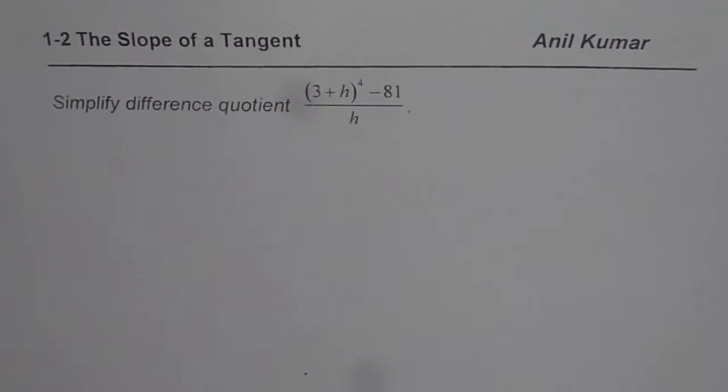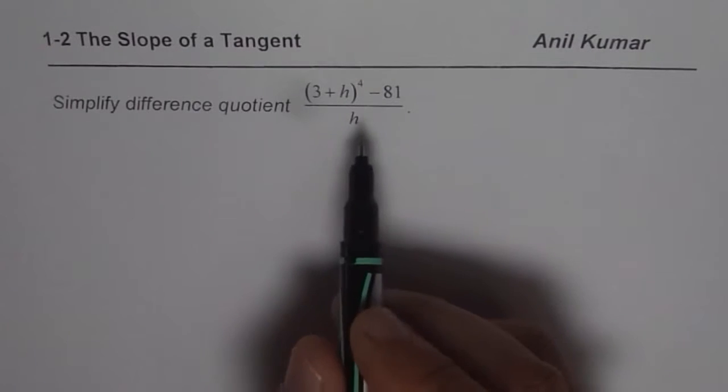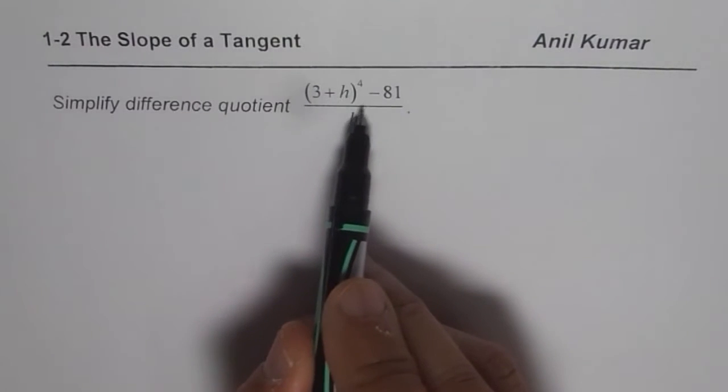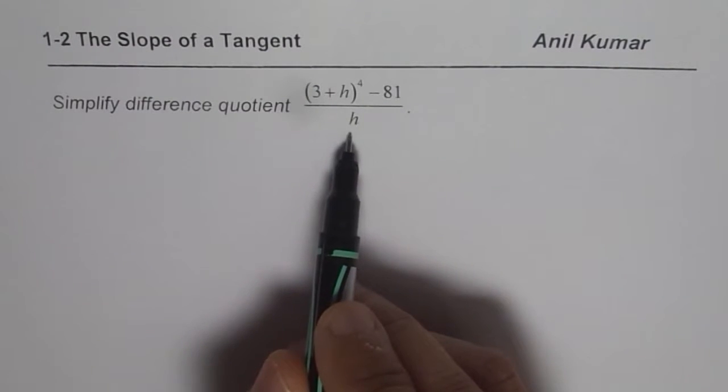I am Anil Kumar and now let us explore the difference quotient expression simplification which is going to help us to find slope of tangent for different kinds of functions. Now here the question is, simplify difference quotient: (3+h)^4 - 81 over h.